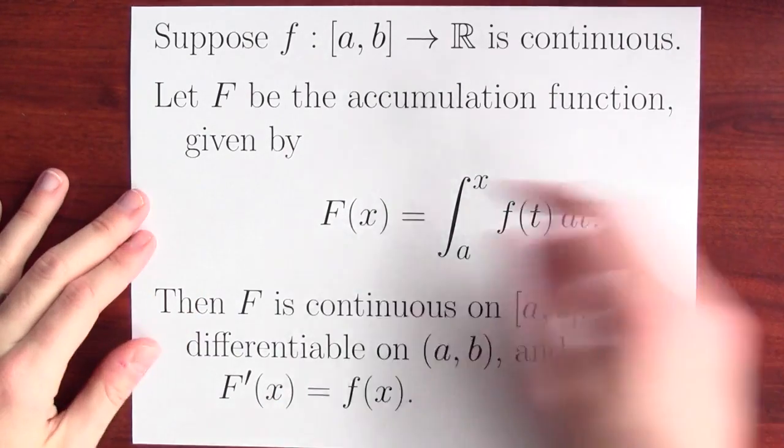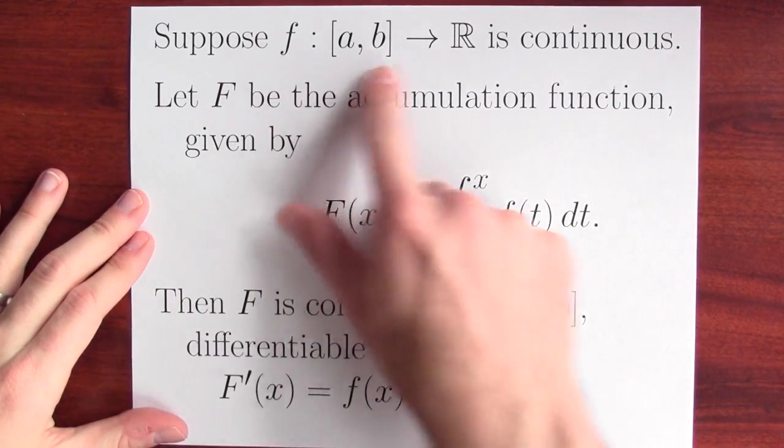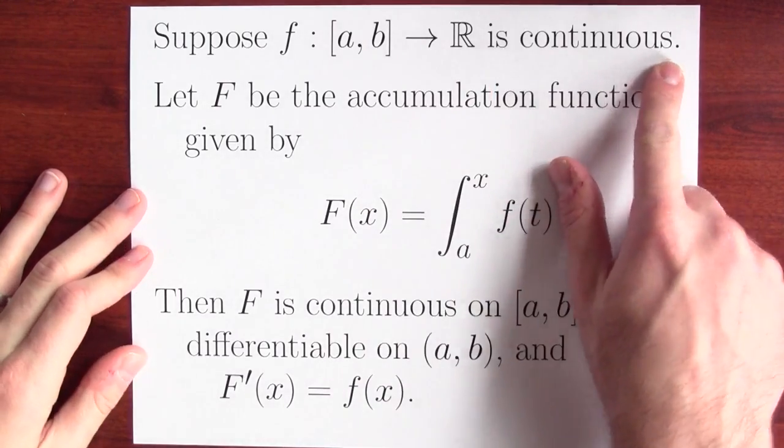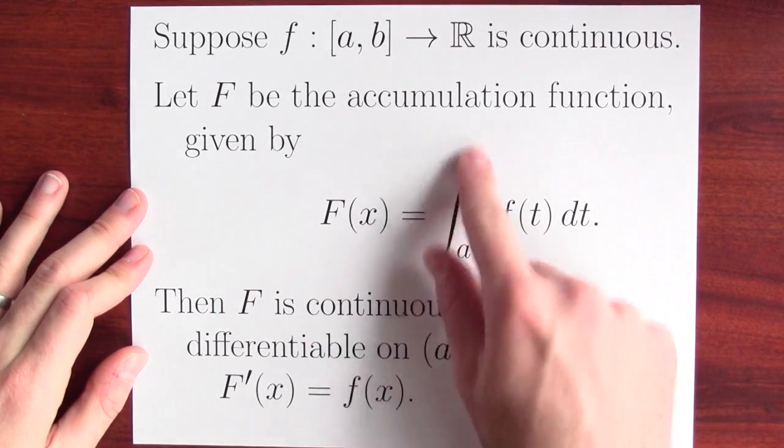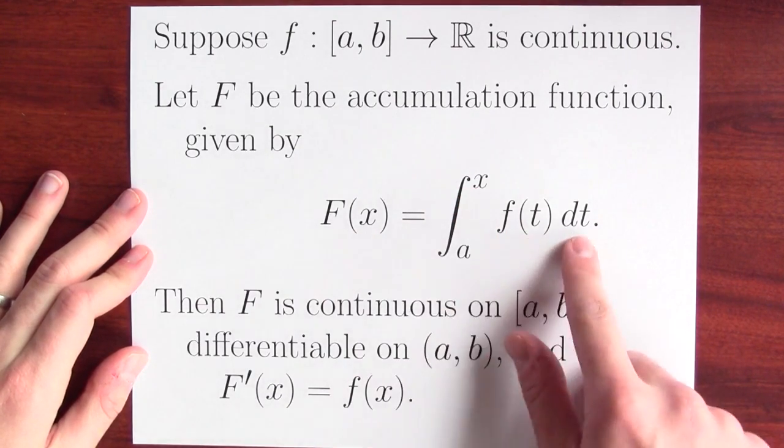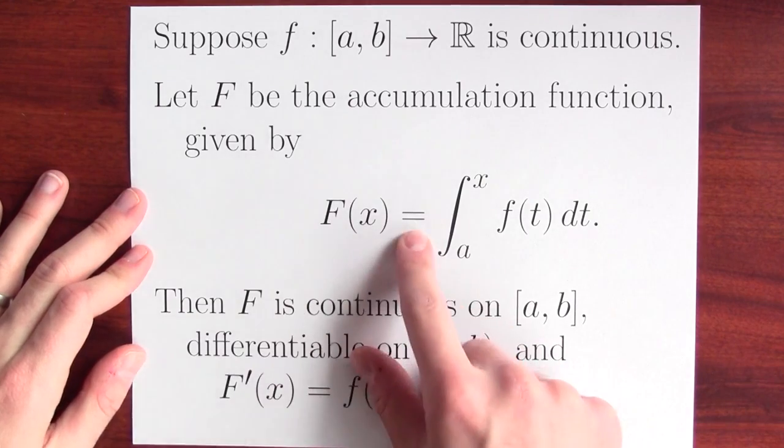Here's the statement of the Fundamental Theorem of Calculus. I got that function little f from the closed interval to the real numbers, and it's continuous. And I've got the function big F, which is the accumulation function. It's the integral from a to x of f of t dt. That's the definition of F of x.